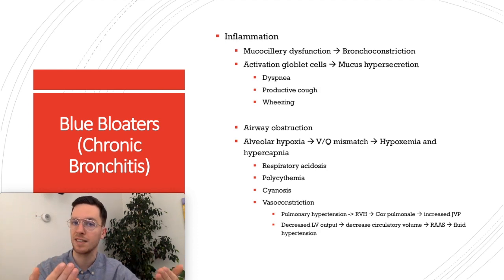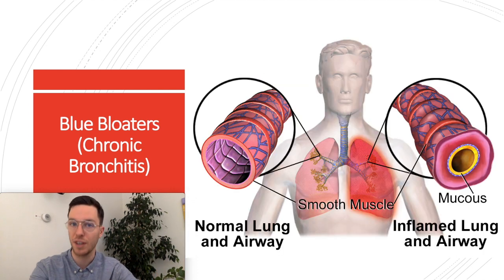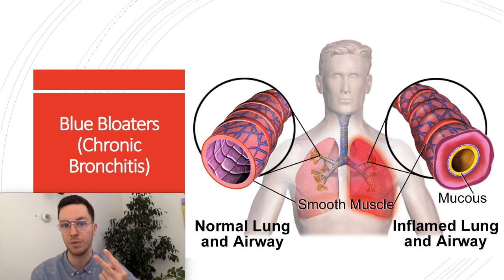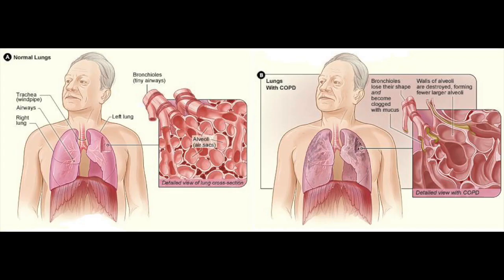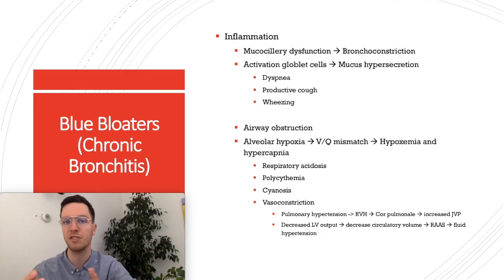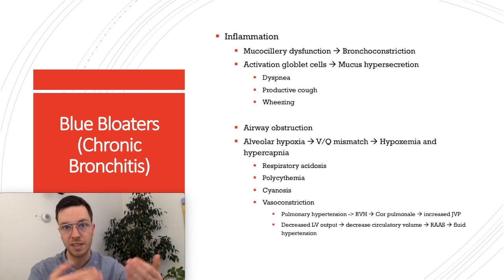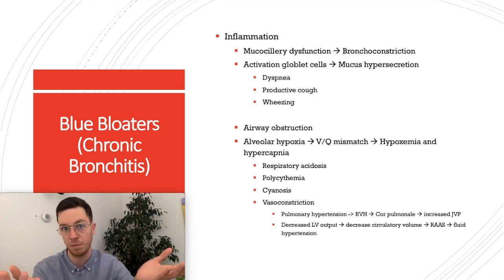This brings us to the second component of COPD: chronic bronchitis, or the blue bloaters. Again, this is mostly caused by inflammation, which leads to two components. First, mucociliary dysfunction, causing bronchoconstriction of your small airways — your bronchioles and even alveolae. Second, overactivation of your goblet cells, leading to hypersecretion of mucus. Both cause an obstructive effect in your lungs, leading to difficulties breathing, wheezing — a squeaky breathing — and a productive cough.